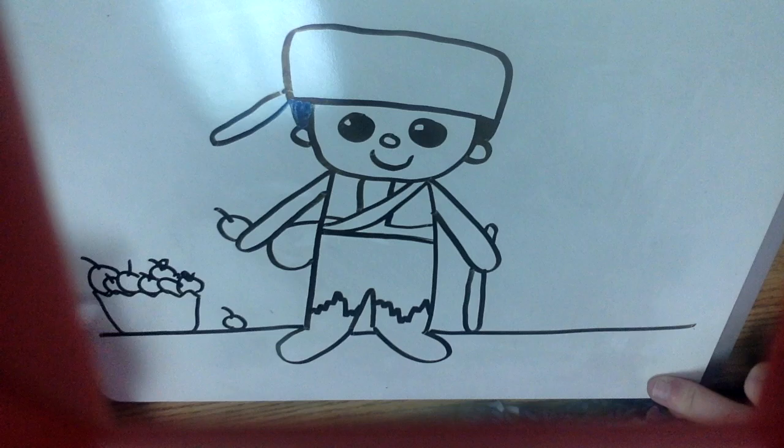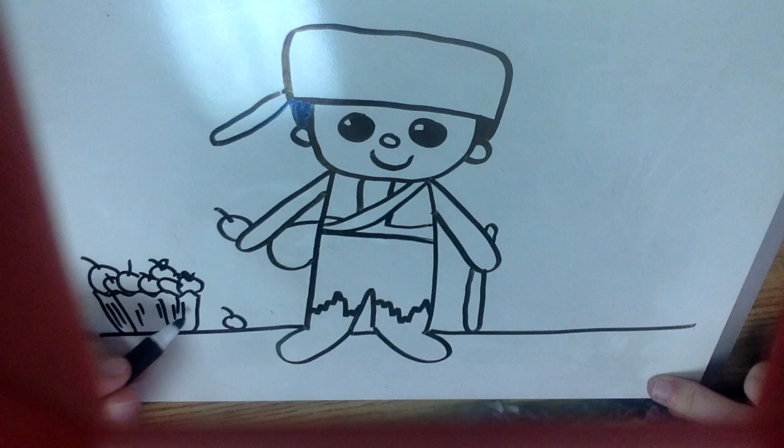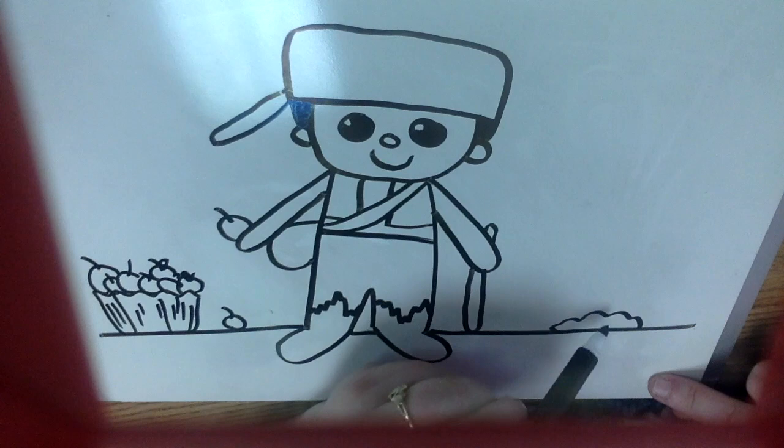When you color those in, they're going to look so good. There's his basket. You might even put an apple tree over here, maybe a small growing apple tree that's just sprouted a couple of leaves on there.